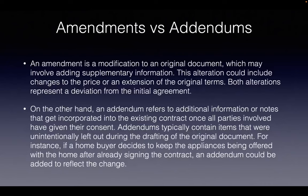You're also going to get questions around amendments versus addendums. An amendment is just a modification to an original contract — maybe the price drops from $550,000 to $525,000, or a deadline gets extended a few days. Both of these are a deviation from the initial agreement. Think of an amendment as a modification or deviation from the initial agreement.